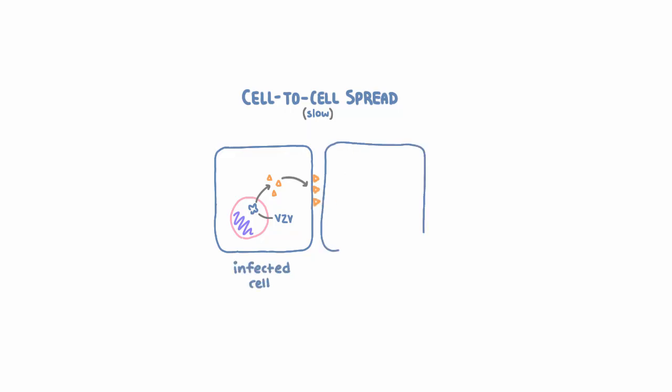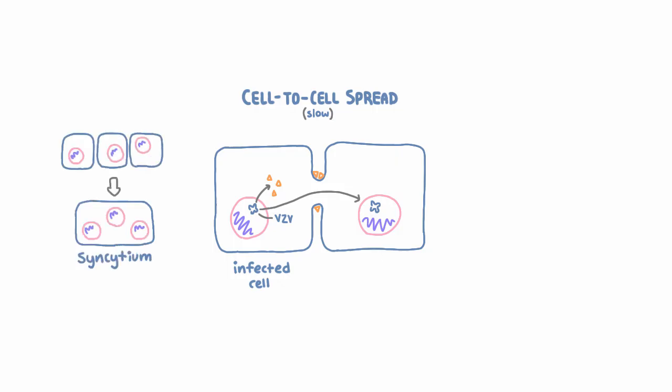And the answer is that VZV uses only cell-to-cell spread, and that's slow. The way that works is that because of glycoproteins made by VZV, a VZV-infected cell can fuse with an uninfected cell and insert its viral DNA into the new cell, infecting it. And the fused cells can actually form syncytia.